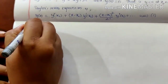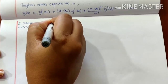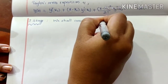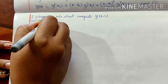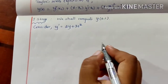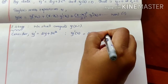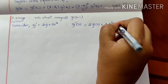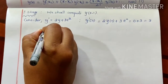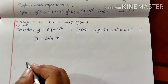Step 1: For the first stage, we shall compute y(0.1). Consider the given differential equation: y dash equal to 2y plus 3 into e raised to x. Then y dash of 0 is 2 times y(0) plus 3 into e raised to 0. y(0) is 0, and e raised to 0 is 1, so y dash of 0 equals 3. When you differentiate, y double dash is 2 times y dash plus 3 into e raised to x, since the derivative of e raised to x is e raised to x.